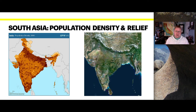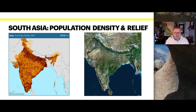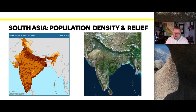Looking at population density and relief side by side — population density on the left, raised relief on the right — we can see some of the tallest mountain ranges along Nepal and Bhutan. Looking at the population itself, populations are most dense along the peripheral areas and along waterways.